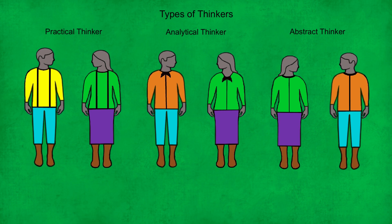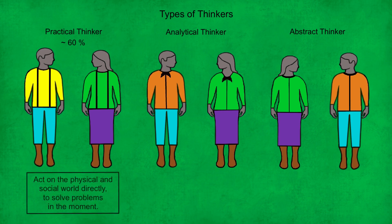These general thinking types can be applied to any culture at any time in history. Across any culturally reproducing population of humans, about 60% are practical thinkers. These thinkers act on the physical and social world directly in order to solve problems in the moment, and they are the most important individuals in any culture as they make it possible for the population to survive and reproduce. These thinkers include all types of manual, trade, and office workers, caregivers, police officers and soldiers.